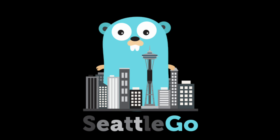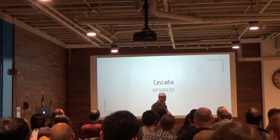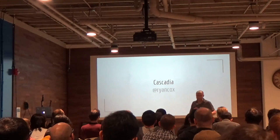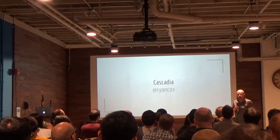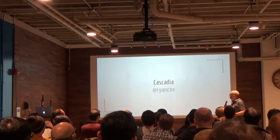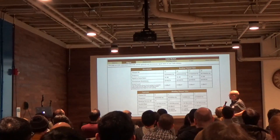Let's go ahead and get started. I'm on the list. I figured since I had the microphone I would just start. I want to talk about this library called Cascadia. Cascadia is actually written by a Washington resident — in Eastern Washington.